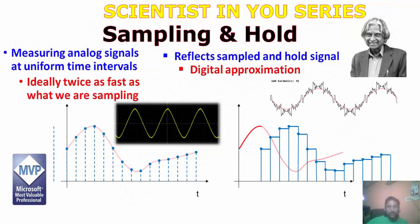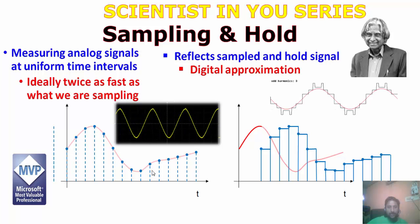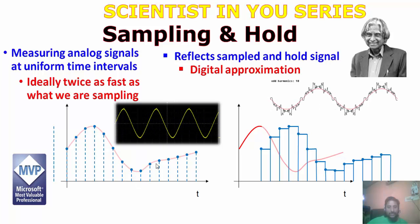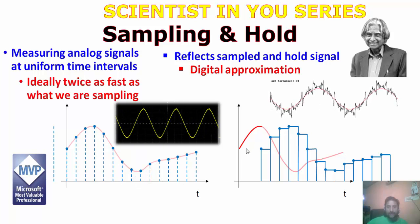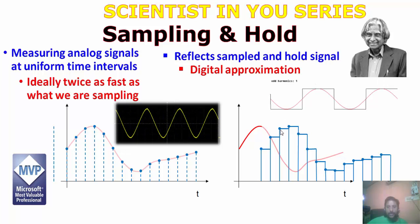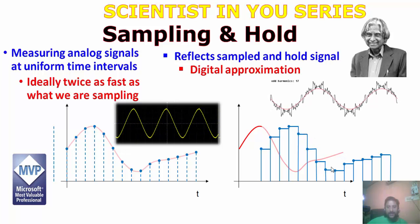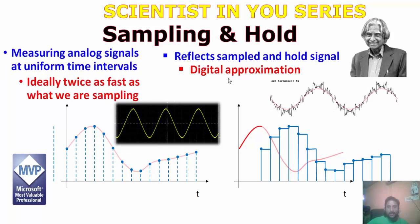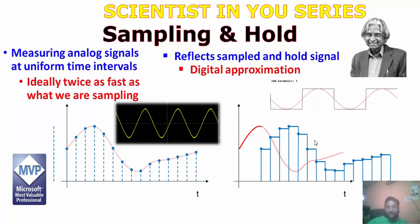If you talk about sampling and holding, you can see the analog values and how we try to map and sample them, getting the exact discrete values. We measure the analog values at uniform time intervals, which gives us the sampled and held signal. A digital approximation is then made. This is how sampling is done.